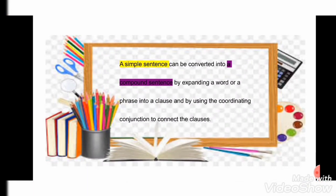Those were some of the rules — many more exist, but following these few tricks you can easily transform sentences from simple to compound. In short, a simple sentence can be converted into a compound sentence by expanding a word or phrase into a clause and using a coordinating conjunction to connect the clauses.